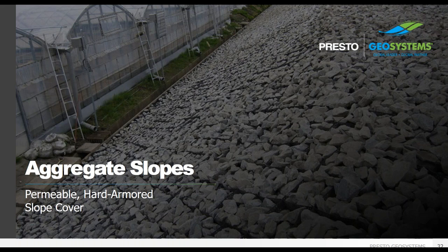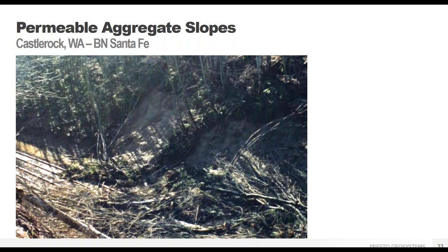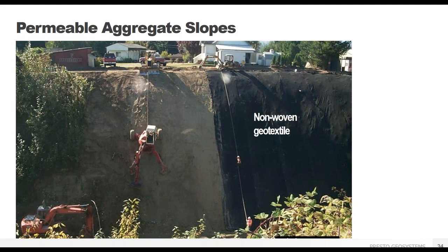The next application type will be aggregate slopes. This was a steep slope adjacent to a railroad track where vegetation was not enough to hold the slope in place, and after several record rainfall events that saturated the slope, we saw a slope failure. The existing vegetation was removed and the slope graded with a spider excavator before placement of the GeoWeb system. A nonwoven geotextile was placed beneath the system to help keep the aggregate in place and prevent it from getting under the GeoWeb panels, which could damage the system and cause lifting.